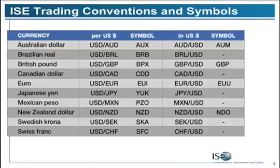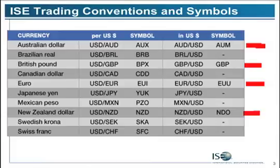Here are the symbols. The question I get most often is: what is the symbol for the Canadian dollar? The Canadian dollar symbol is simply CDD. We have dual conventions for some of the currency pairs. You'll note that the Australian dollar, the British pound, the euro, and the New Zealand dollar all trade in dual conventions, meaning that you can trade based on a dollar base or a dollar quote.